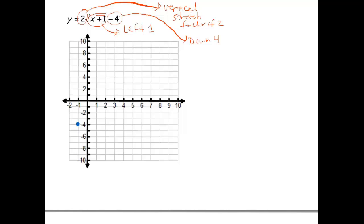The next point was at 1, 1, right here. So we're just going to repeat those steps again. Move left 1. Notice I'm at the point 0, 1. Let's take our y value and multiply it by 2. We get 2. One more shift is our 4 down. 1, 2, 3, 4. So it looks like I'm at 0, negative 2.